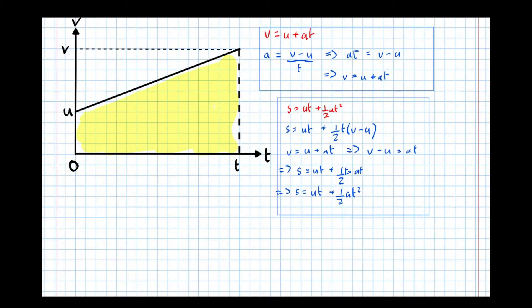So sticking with this idea of displacement, let's now try and derive S equals V T minus a half A T squared. This time, we're going to consider the entire area of this dotted rectangle here. Then we're going to take out this white triangle to leave the area that's shaded yellow.